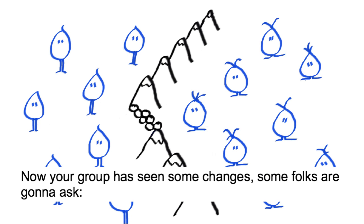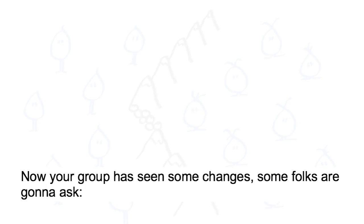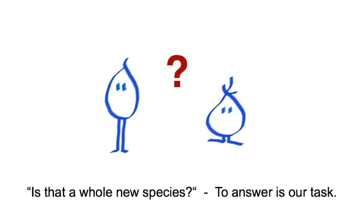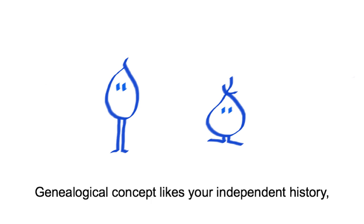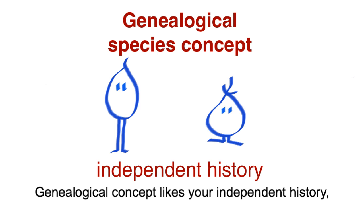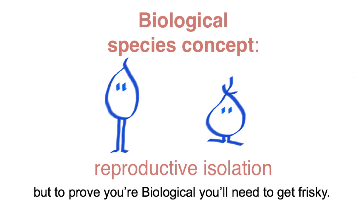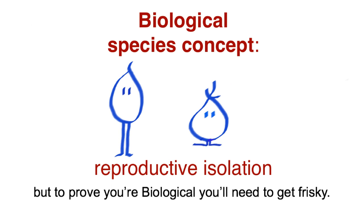Now your group has seen some changes and some folks are gonna ask: Is that a whole new species? To answer is our task. A genealogical consequence is your independent history, but to prove you're biological you need to get crispy.